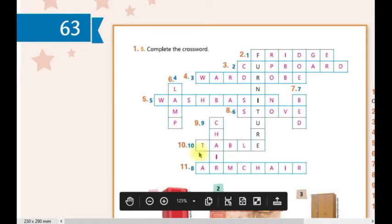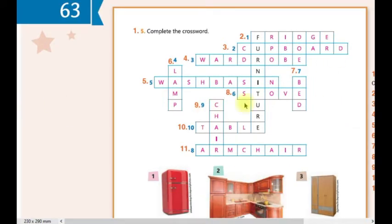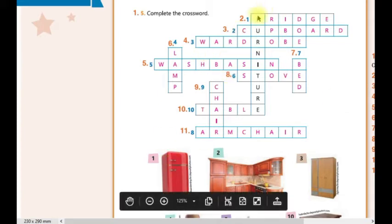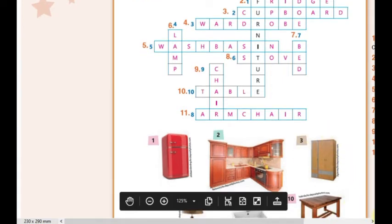Vamos corrigir o exercício no livro de vocês. Na página 63, nós temos aqui uma cruzadinha, que vocês devem completar com o nome das funitures, dos imóveis e dos objetos domésticos, da casa. Então, vamos lá. Número 1 aqui é o fridge, que é a geladeira. Número 2 é o cupboard, que são os armários. Número 3 é a wardrobe, que é o armário também. Aqui o cupboard é o armário de cozinha. E aqui o wardrobe é o armário do quarto.